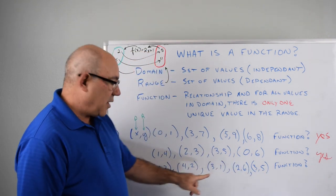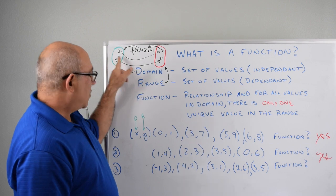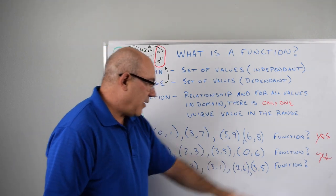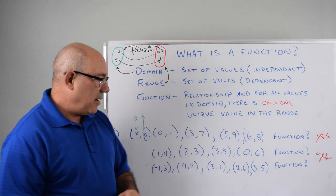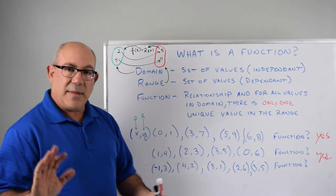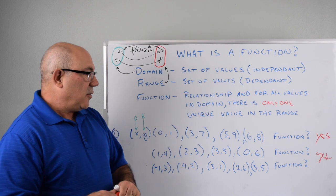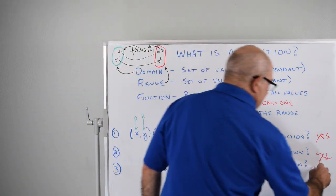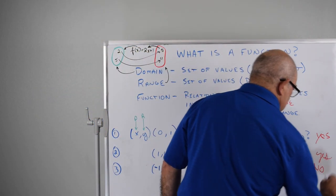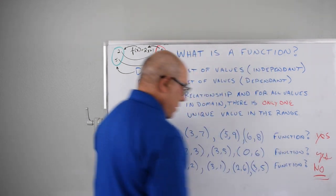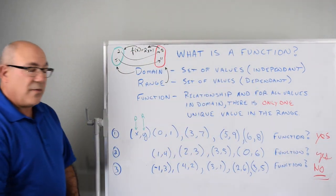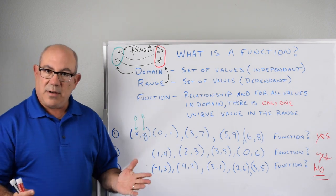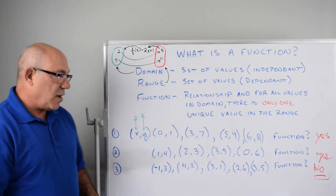And that's not good. That's no bueno. So we have to say that that is not a function. So the first two, they have unique values for every value in the domain. We have a unique value in the range. The third one, we do not.